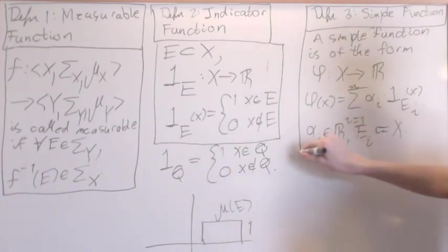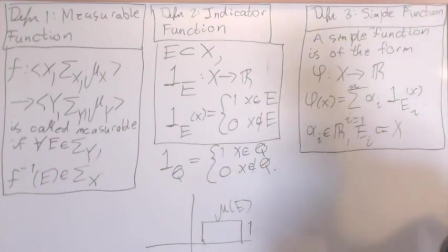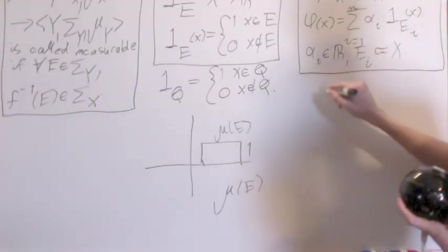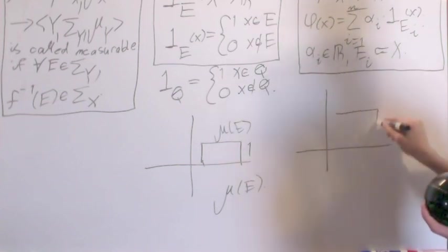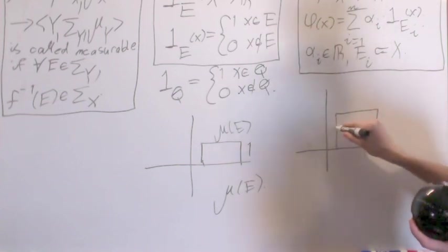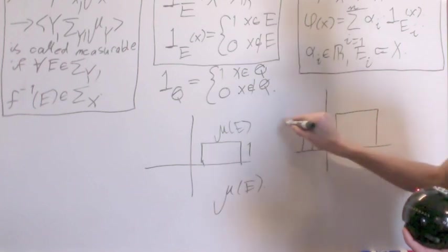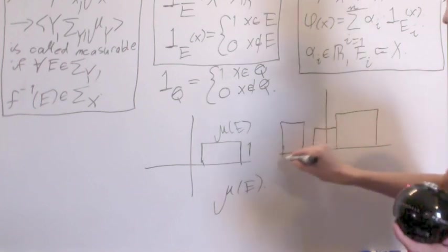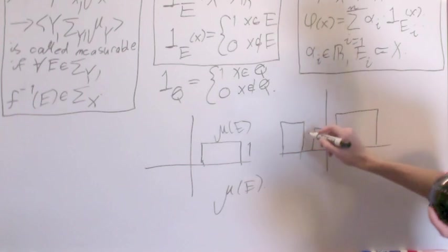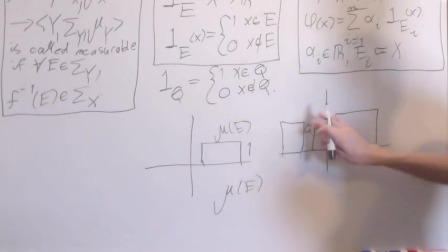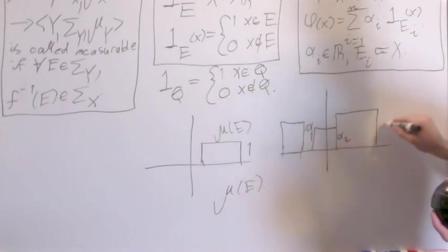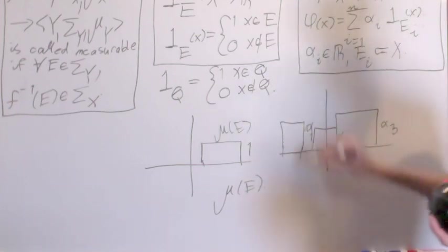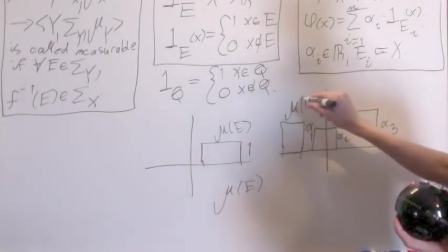And that's a simple function. And then similarly, if we are going to have a graph of this function, maybe it looks something like this. Right? All you do is you have each of these individual heights. Alpha 1, alpha 2, alpha 3,